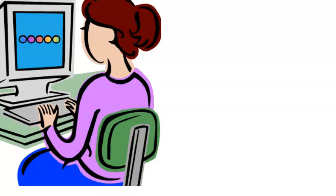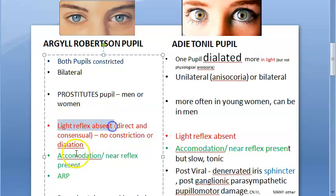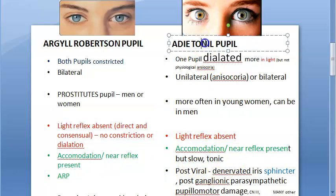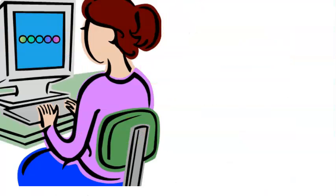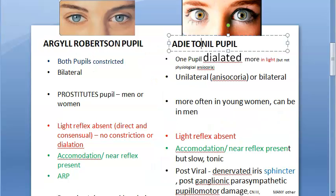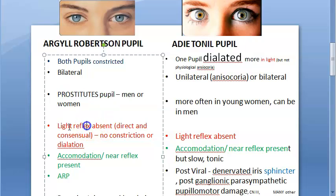Light reflex is absent in both conditions, and accommodation or near reflex is present in both. However, in Adie's tonic pupil, the accommodation reflex is sluggish and slow — tonic — hence the name. That is also why Argyle Robertson pupil is called 'prostitute's pupil': it accommodates but does not react to light.